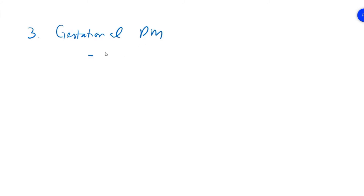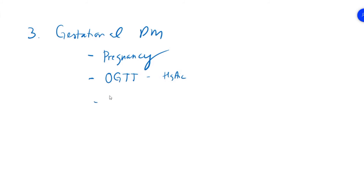The third type is gestational diabetes, which usually occurs during pregnancy. It is checked using an oral glucose tolerance test or hemoglobin A1c. People with gestational diabetes are at higher risk of developing Type 2 diabetes in the future. Testing is typically done at the OB-GYN office, and treatment depends on the individual patient and the severity of the condition.